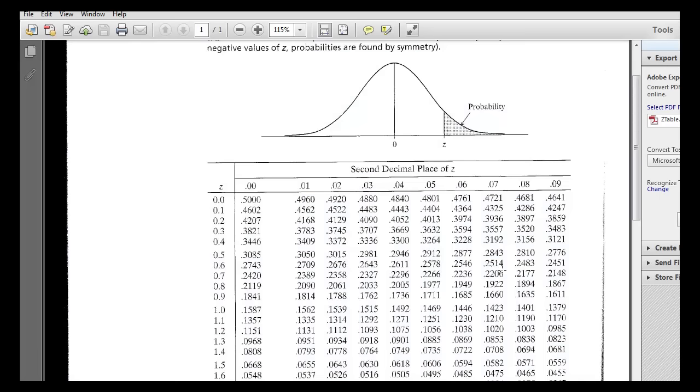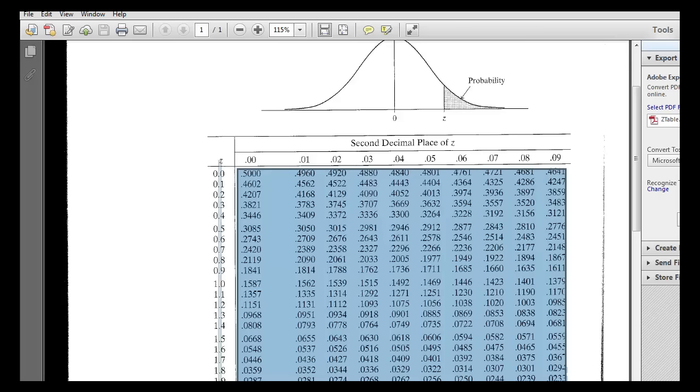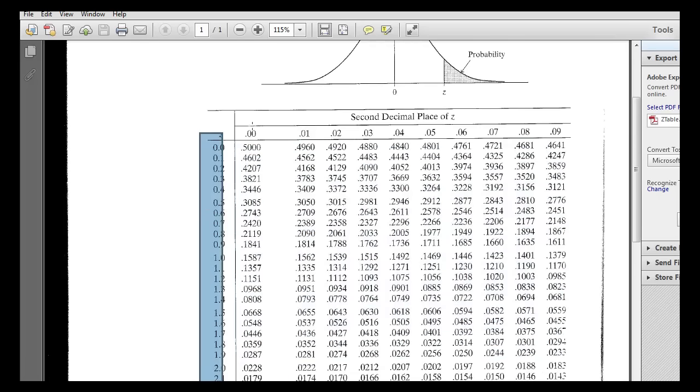Okay, that's all it is. The thing to remember is that the p-values are inside the table, and the corresponding z's are a combination of this left column and this top.